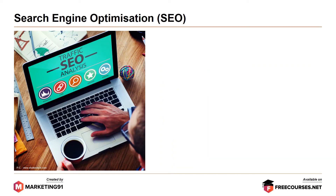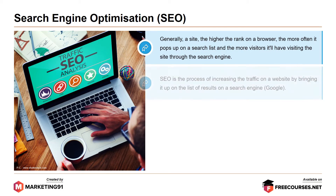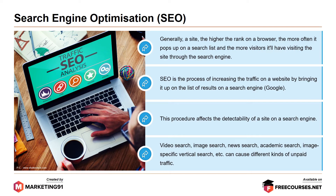Moving on to the aspect of search engine optimization. Generally, the higher the rank on a browser, the more often it pops up on a search list and the more visitors it will have visiting the site through the search engine. SEO is the process of increasing the traffic on a website by bringing it up on the list of results on a search engine such as Google. This procedure affects the detectability of a site on a search engine. Video search, image search, news search, academic search, image-specific vertical search, etc. can cause different kinds of unpaid traffic.